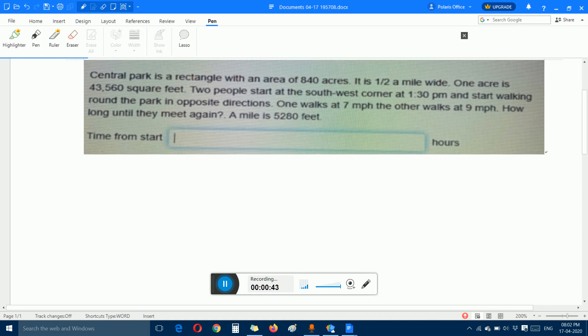Solution: Area of central park is given as 840 acres, equal to 840 times 4046.86 square meters. After multiplying, we get 3.4 million square meters.